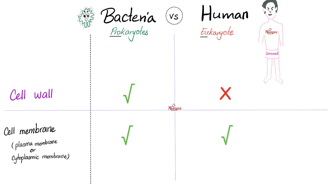Bacteria versus humans: prokaryotes versus eukaryotes. Both of them have a cell membrane, also known as plasma membrane or cytoplasmic membrane. But only bacteria have a cell wall — humans do not. Hence, the idea behind the class of antibiotics known as cell wall synthesis inhibitors, which include the beta-lactam antibiotics, which include penicillin.